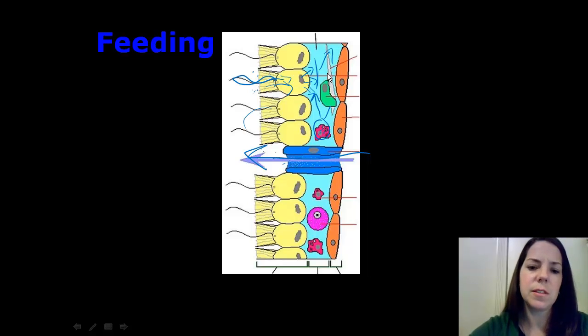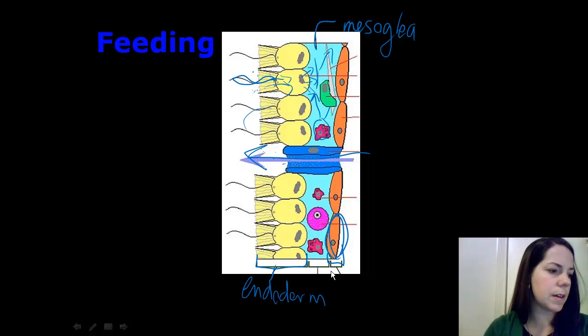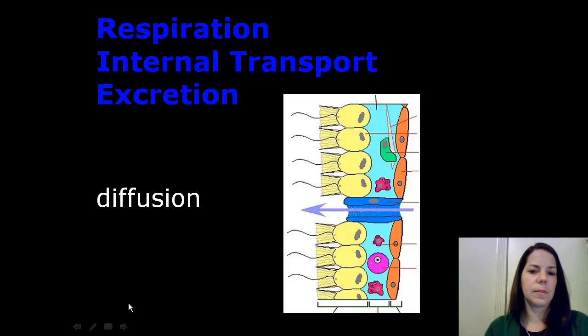Here you can quickly see there's three layers. This is the ectoderm here. We've got the mesoglia, another layer here, and this is the endoderm, the collar cells. So let's move on to the next functions.